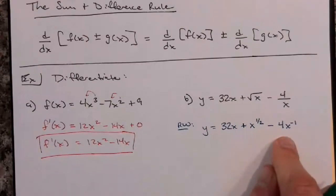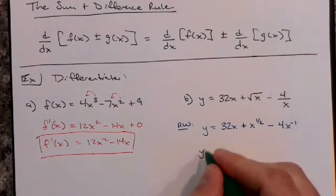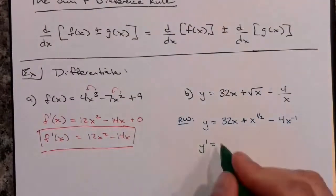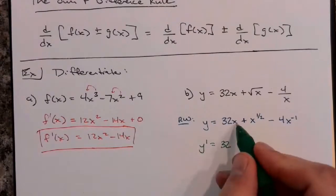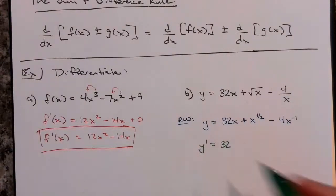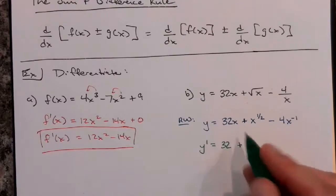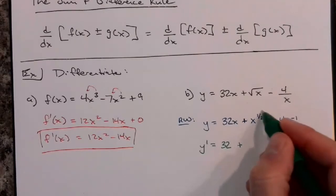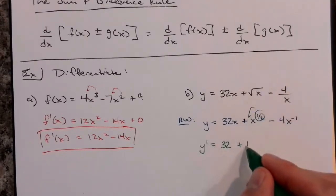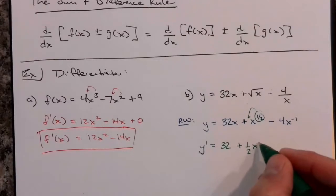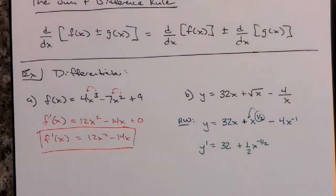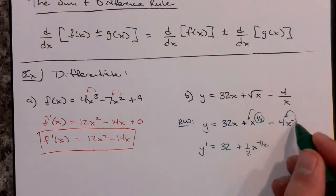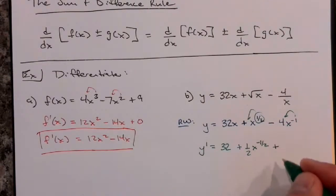Now we're going to find y′. The derivative of 32x: the constant stays in front, it's 32, and the derivative of x is just 1, so it's just 32. Plus, the derivative of x to the 1/2: the 1/2 comes in front, so it's plus 1/2 times x to the 1/2 minus 1, which is negative 1/2. And here we have minus 4x to the negative 1: you bring the negative 1 in front, so it's negative 1 times negative 4, which makes this a plus — it changes the sign.